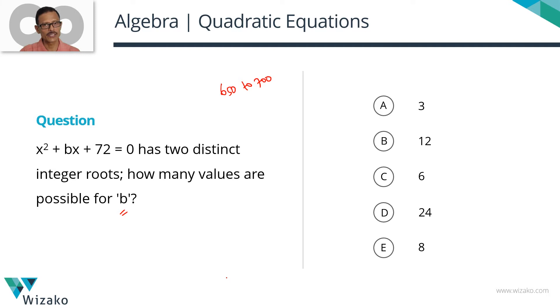x squared plus bx plus 72 equals 0 has two distinct integer roots. Whenever any of this information is given, all these adjectives carry a lot of meaning. They're saying these roots are integers and distinct. Without the information that they're integers, this question cannot be solved. What do we have to find? We need to find how many values are possible for b. b is the coefficient of x in this quadratic equation. The core of what we need to know is what are the sum and product of roots of a quadratic equation and how do they relate to the coefficients?